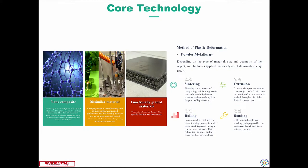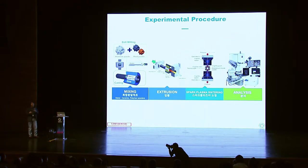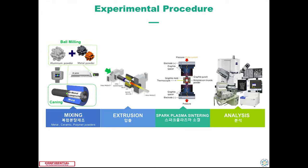For example, sintering, extrusion, and rolling. We can also use some bonding technology. Today I'm going to introduce three practical composite materials. Using these steps — for example, carbon nanotube and metallic materials mixed together and then processed through extrusion or sintering — we can finally get very nice composite materials.